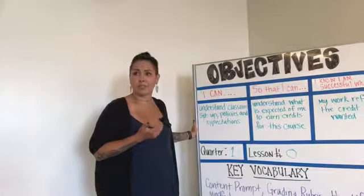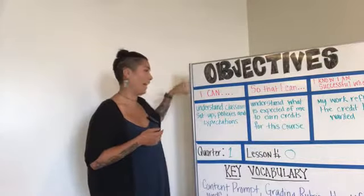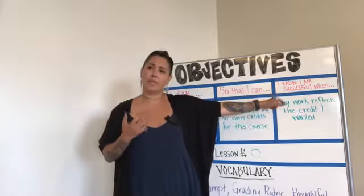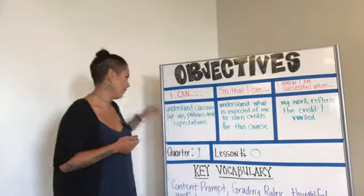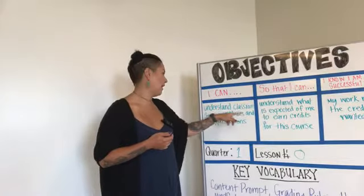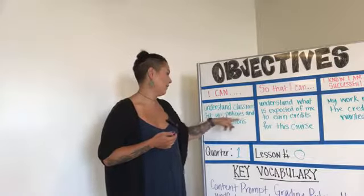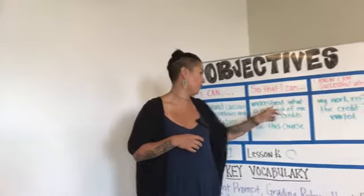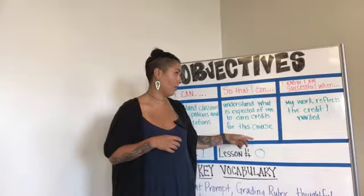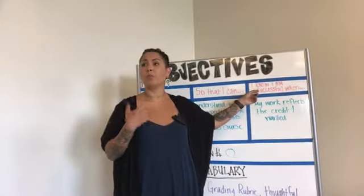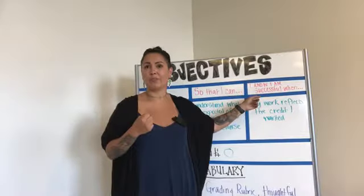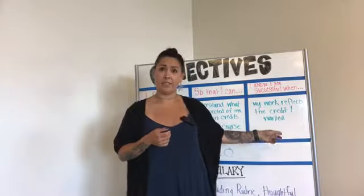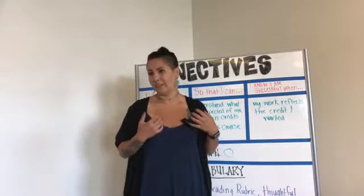That's something that's for the teacher. So what I've done is broken it down into 'I can' and 'I know I'm successful when,' because when a teacher wants you to meet the objective, it's really important that you understand what that means. So today: I can understand classroom setup, policies, and expectations, so that I understand what is expected of me and can earn credits for this course. I know I'm successful when my work reflects the credit that I wanted, because you need to know how to earn your credits here at Independence.